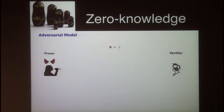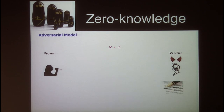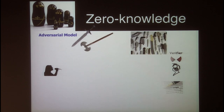The basic adversarial model involves just the two parties interacting with each other. If the prover is adversarial, her objective is to convince the verifier of some invalid statement. And if the verifier is adversarial, his objective is to garner more information than he is supposed to from the interaction.